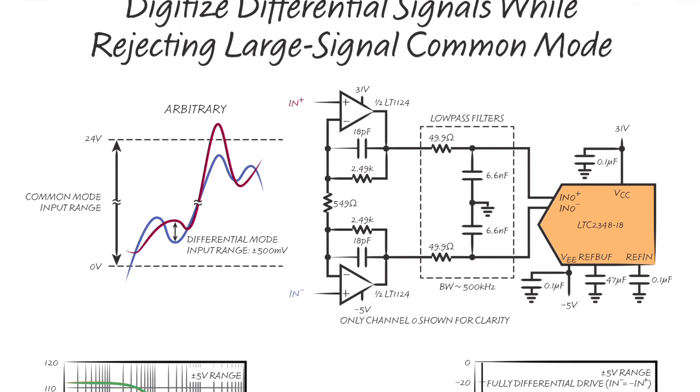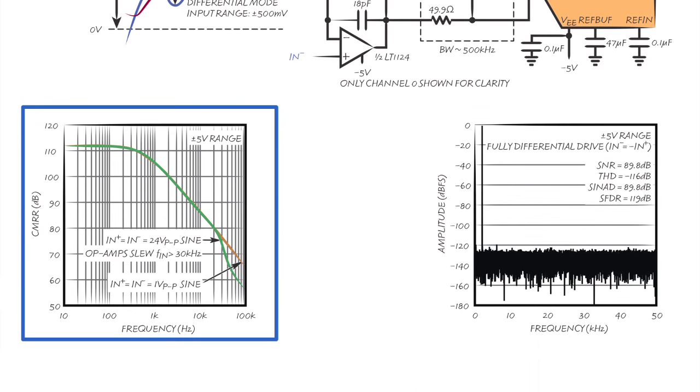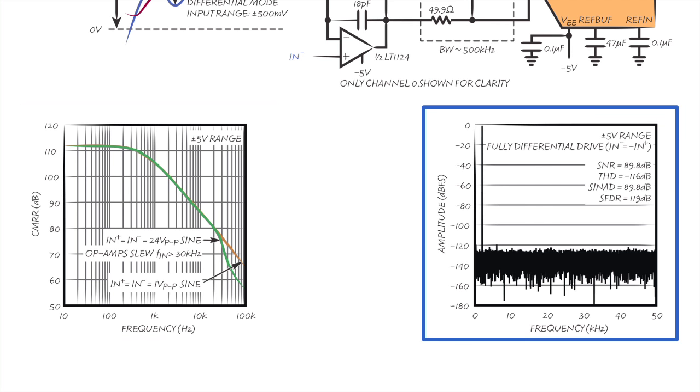The converter's common mode rejection ratio, or CMRR, is responsible for rejecting this unwanted portion of the signal. Notice the flexible high voltage supplies of the LTC 2348-18 are shifted upwards to accommodate this application's input range. Also note the common mode input range extends beyond the chosen softspan full-scale input range. As shown in the plots, measured CMRR performance of this solution is competitive with the best commercially available instrumentation amplifiers. The solution achieves a 90 dB signal-to-noise ratio and minus 116 dB total harmonic distortion at 2 kHz.